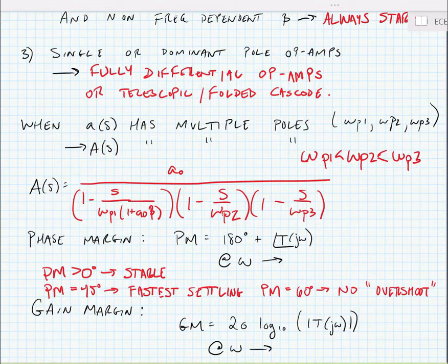Now, we're looking for phase margin to find 180 degrees plus the angle of the loop gain. And we're looking specifically for the frequency that the angle of the loop gain at the frequency where the magnitude of the loop gain goes to unity.